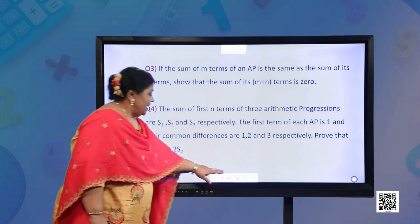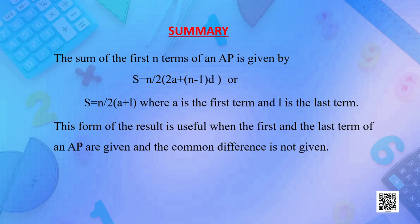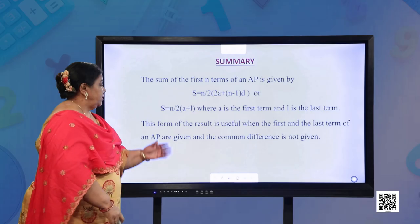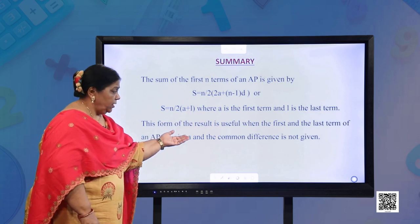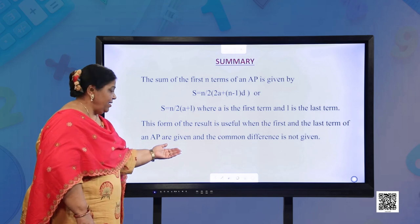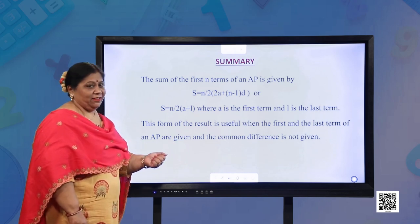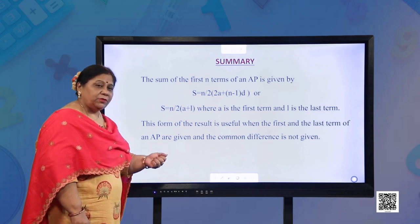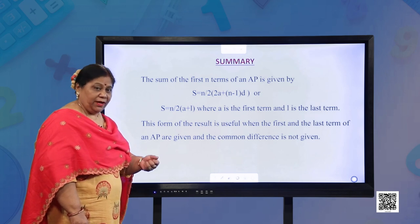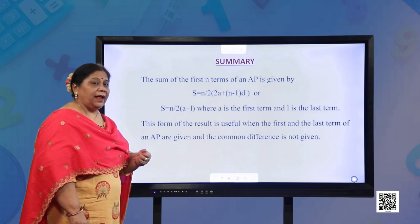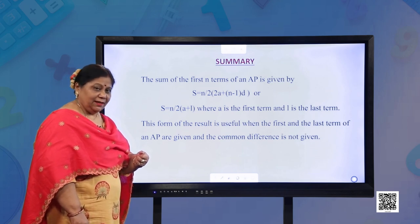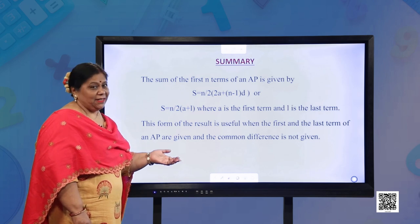In summary, the sum of first n terms of an AP is given by S = n/2 × (2A + (n−1)D), or S = n/2 × (A + L), where A is the first term and L is the last term. This form is useful when the first and last terms are given and common difference is not. Today we have learned how to use the sum of n terms formula for solving problems related to daily life situations. Please practice the assignment questions. Thank you.